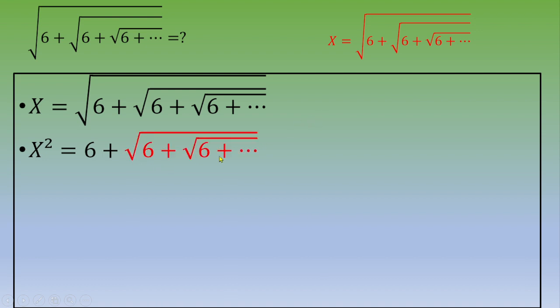What is this quantity? It continues forever. This is well x. So if you plug, now this is x squared is equal to 6 plus x.